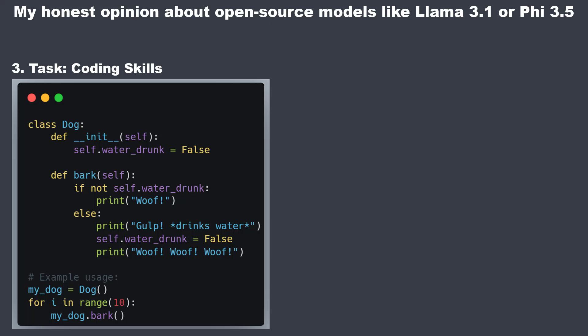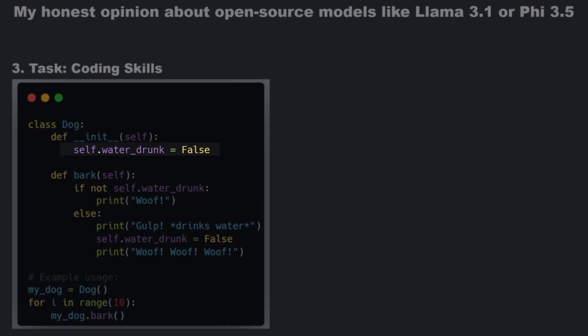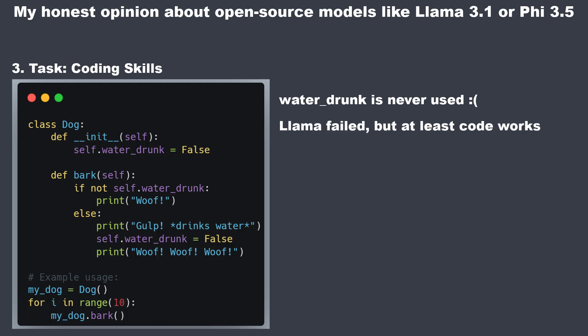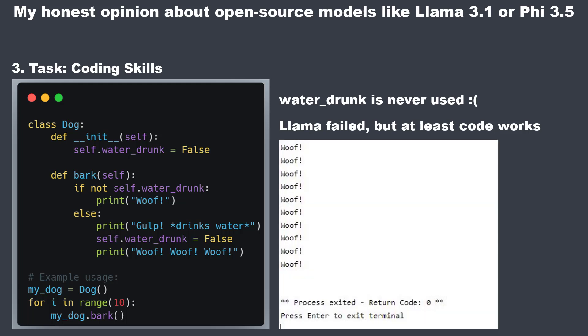LLAMA 3.1 produced a dog class with a 'water_drunk' attribute initialized to false, and a bark method that prints 'woof.' However, the 'water_drunk' attribute is never actually used to force the dog to drink before barking again. So LLAMA 3.1 is also not up to the task, though at least the code is more readable and doesn't produce an error.